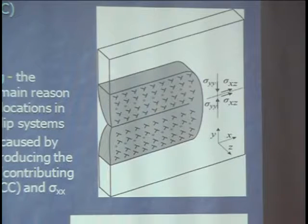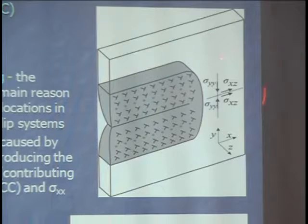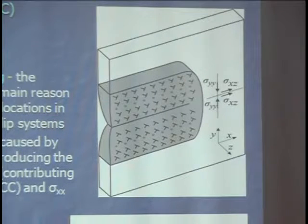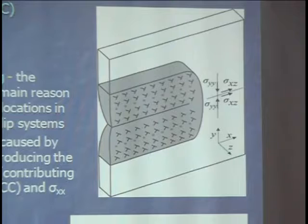You can see that this dislocation configuration produces a stress field near the crack flanks and along all the crack flanks. This stress field includes: a closure normal stress sigma_yy, a shear stress along the crack flanks, and also a component sigma_yz which is not marked here due to space. So you have a rather complicated stress field here that produces both plasticity-induced and roughness-induced contributions to closure, caused by this plastic wedge.